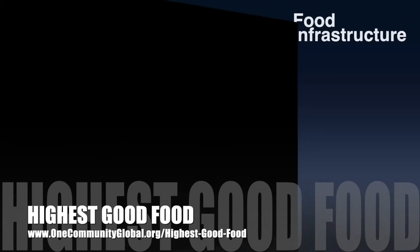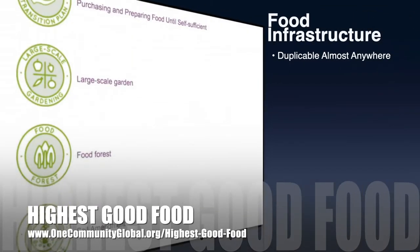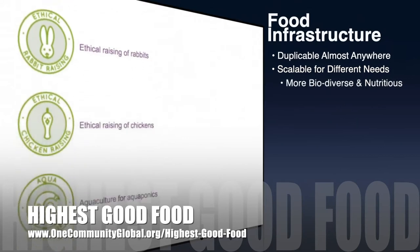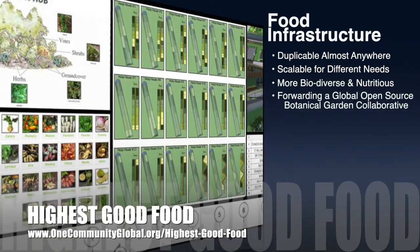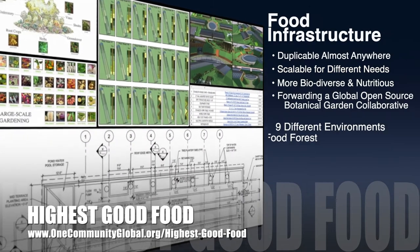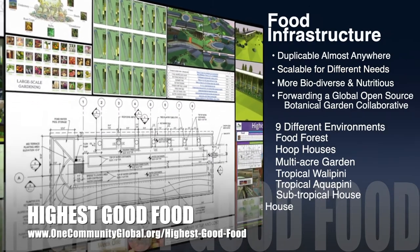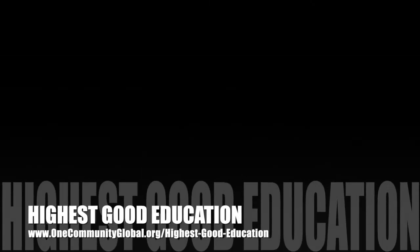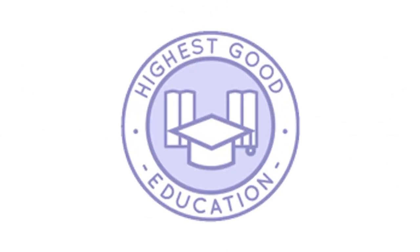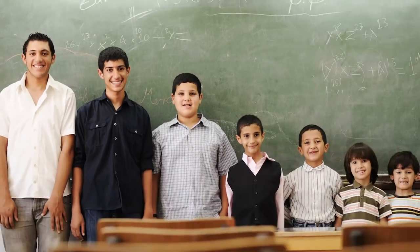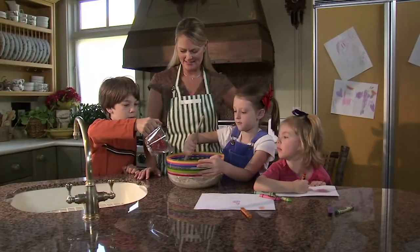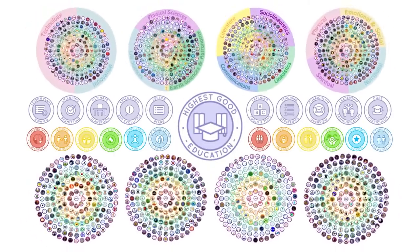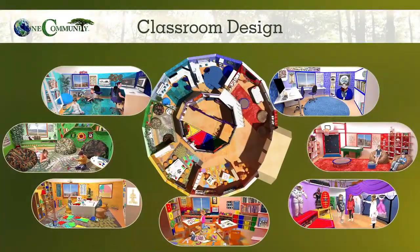One Community's approach to highest good food is duplicable almost anywhere, scalable for different needs, more biodiverse and nutritious, part of forwarding a global open source botanical garden collaborative, and includes nine different free shared and duplicable growing environments. The next component is highest good education — this component is complete and pretty much ready to launch once we're on the property. One Community's approach to highest good education is designed for all age groups, adaptable to any schooling environment, inspiring and fun for all participants, and includes national standards, all national subjects, lesson plans, teaching strategies, learning strategies, tools, classroom design, and more.